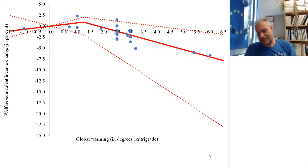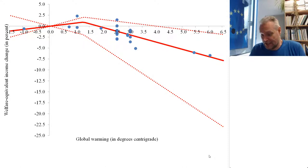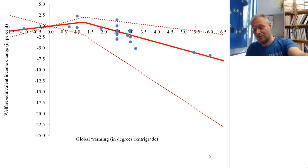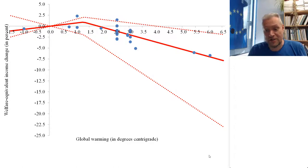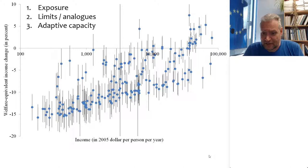The problem with averages is that very few people live on the average. Using the same data, I'm going to show the impact of climate change on the average welfare per country. We're going to focus on two and a half degrees because that is where most of the estimates are for two and a half degrees of global warming.